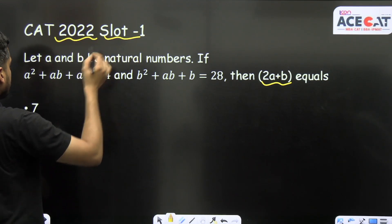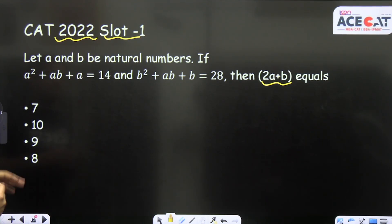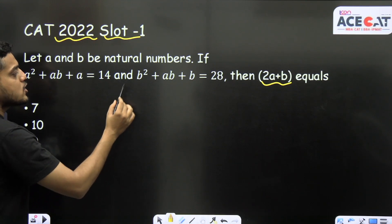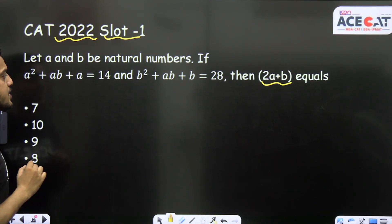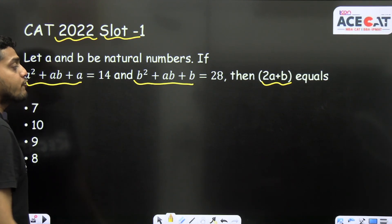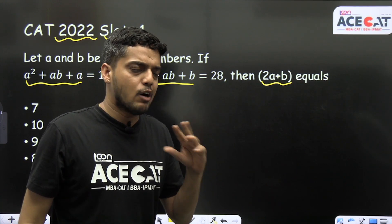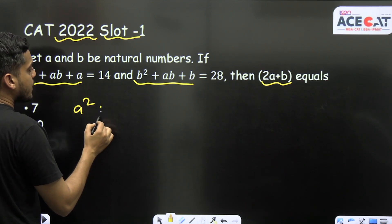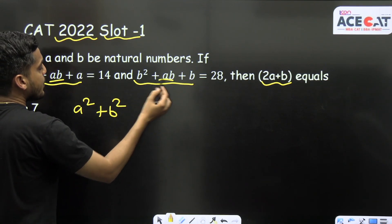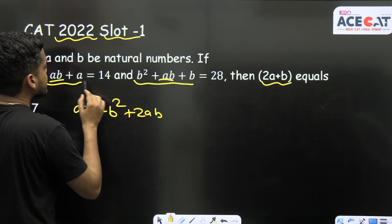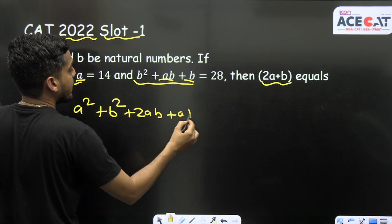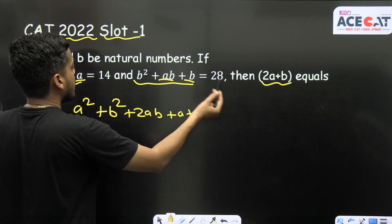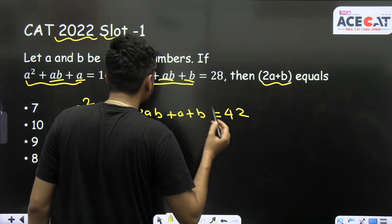First, what we can do is add these two equations: a² + ab + a and b² + ab + b. If I add these two equations, I will get the formula for (a+b)². When I add them: a² + b² + ab + ab + 2ab, and then a + b + a + b, must be equal to 28 + 14, that is 42.